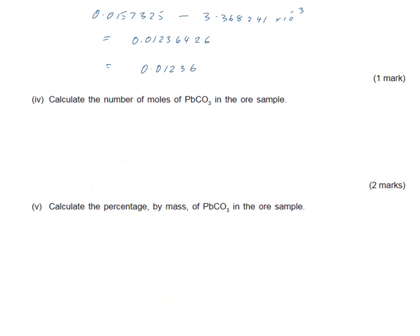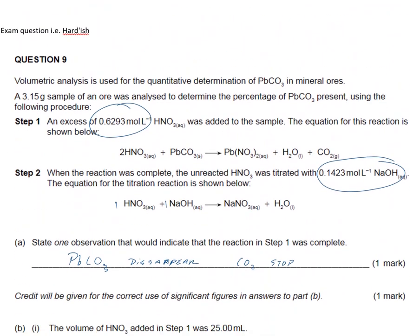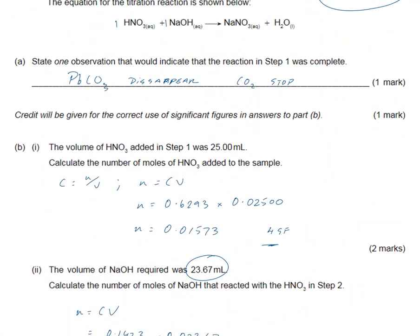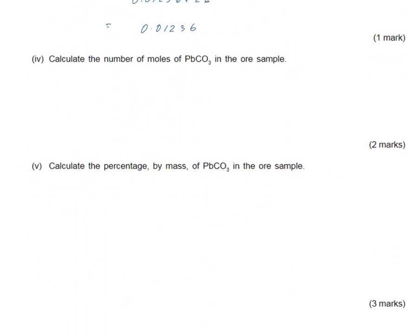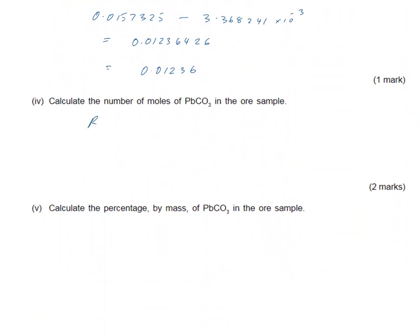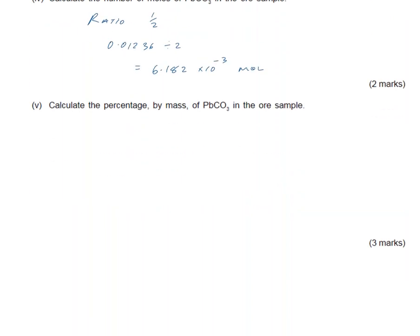In the next one, look at the ratio of lead carbonate in the ore sample. We've just calculated the amount of nitric acid, so now we need to work out how much lead carbonate. It's a two-to-one ratio from the balanced equation, so the ratio is one-half because it decreases. I'm going to divide this answer, 0.01236, divided by 2, and that gives me 6.182 times 10 to the power minus 3 moles. That's the lead carbonate in terms of moles that reacted.